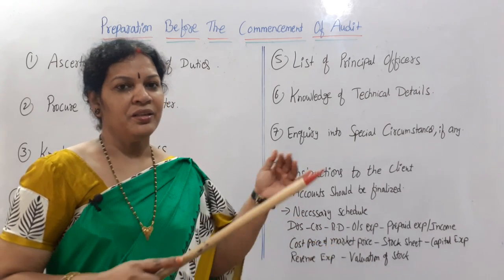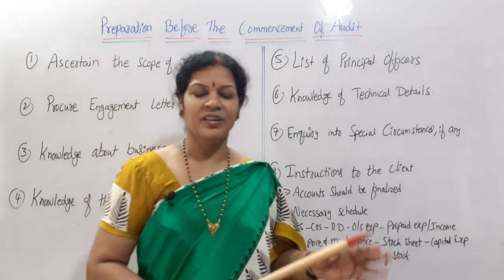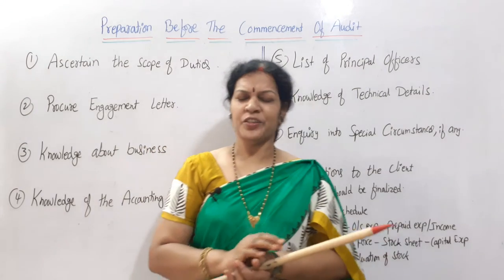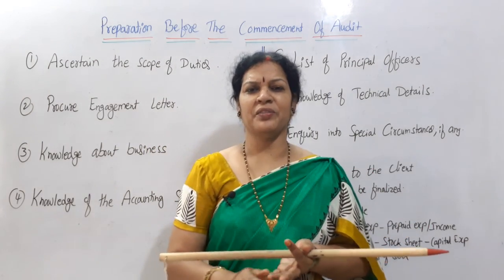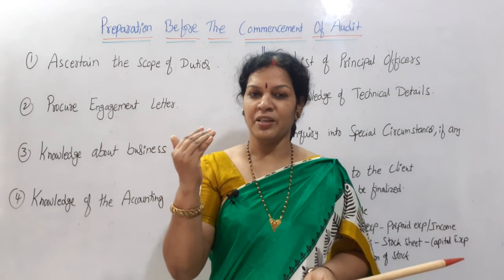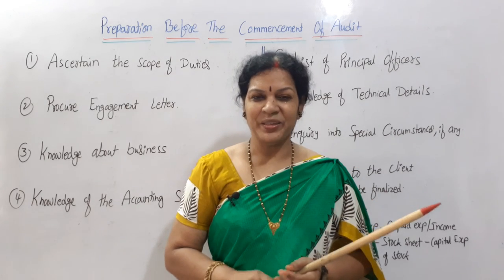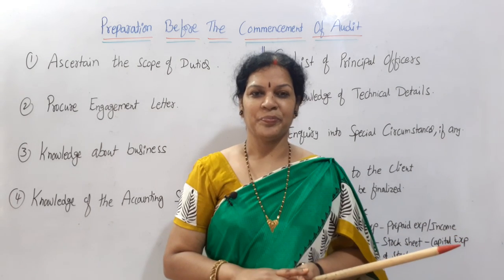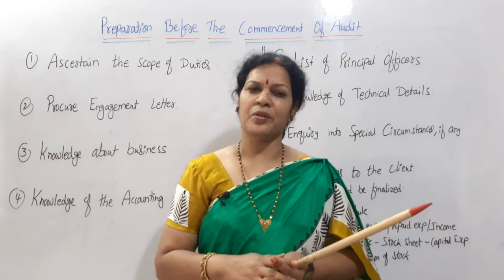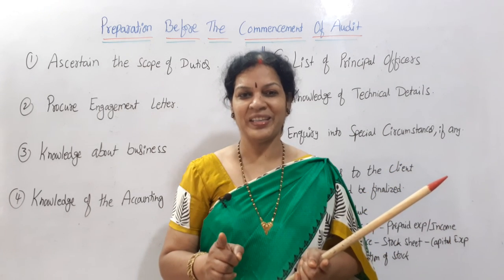Once the client is ready to provide all of this, the auditor has completed all his planning and preparation and can start his work. This is a very important topic both practically and from an examination point of view. Remember it step by step: know the duties, get the appointment letter, know the business, know the accounting system, get the officers list, get technical details, inquire about special circumstances, and give instructions to the client. Please forward this video to all students, subscribe to our channel, and stay connected for more subjects. Good luck!